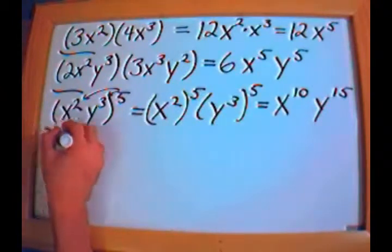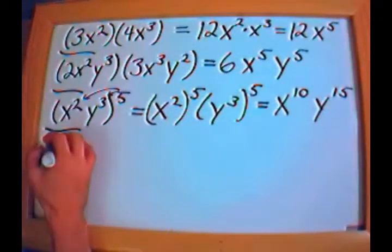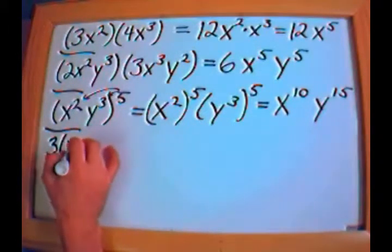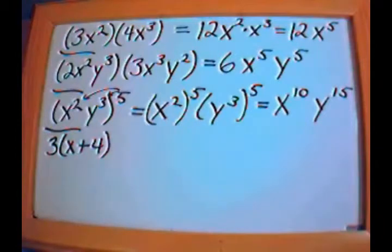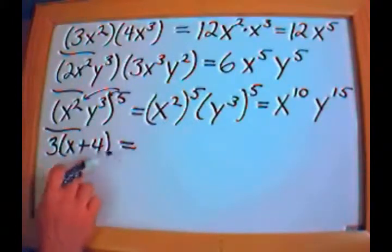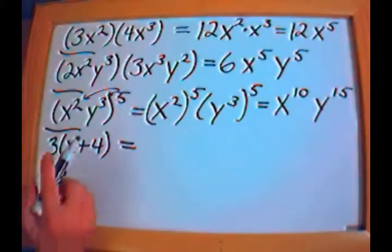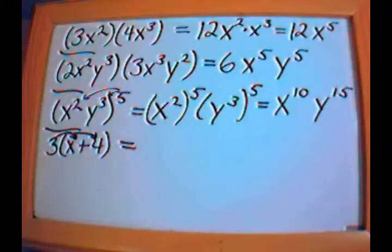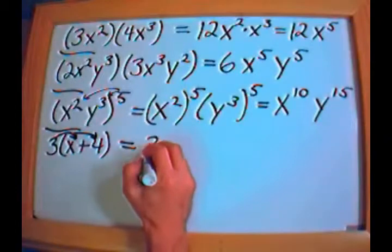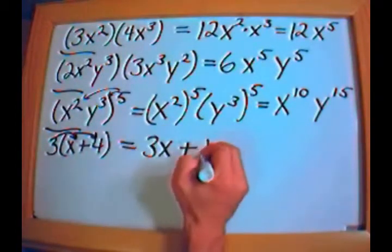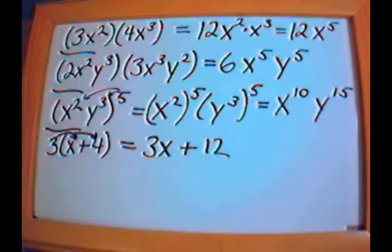Now let's take something a little different. What if I have 3 times the quantity x plus 4? I have some number multiplied by a parenthetical expression with things added together. I use the distributive property and distribute the 3 into each term. The first term is 3 times x, which is 3x, and the second term is 3 times 4, which is 12.